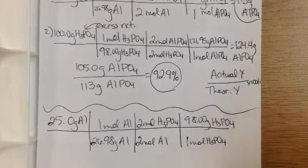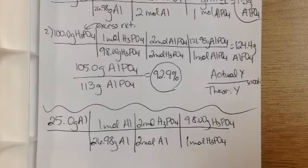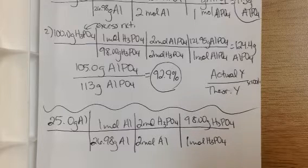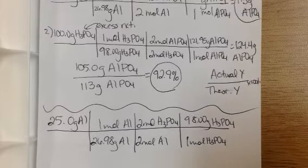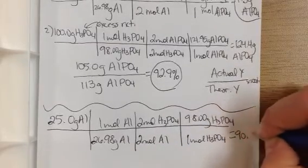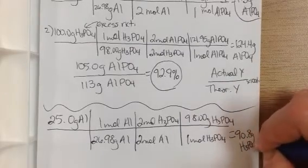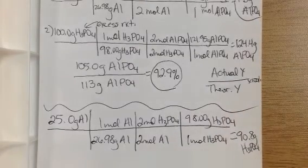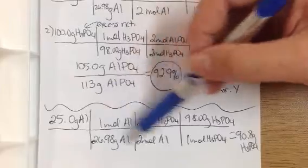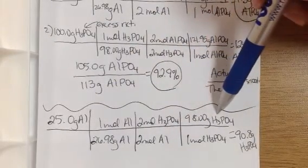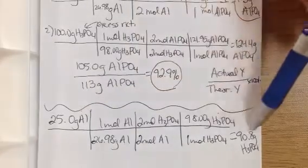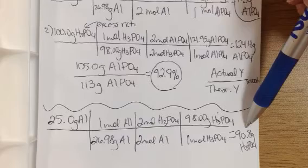So when I do this math, again, what I'm figuring out is how much acid did I actually react my 25 grams with? So how much really got used up? And what I get is 90.8 grams of acid. So again, if I had 25 grams of aluminum to start with, I know that's my limiting reactant. I did stoichiometry here to compare it back to my other reactant to determine that in order to completely use 25 grams of aluminum, I need 90.8 grams of phosphoric acid.